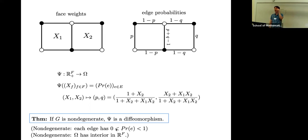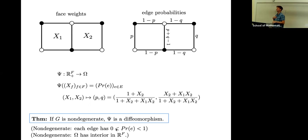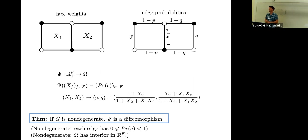It's a non-trivial diffeomorphism from some positive orthant onto the interior of the polytope. 'Non-degenerate' means that every edge participates in some dimer cover — every edge has probability strictly between zero and one, meaning there are some dimer covers which don't use that edge and some which do. The map is a diffeomorphism onto the interior, because the positive weights form an open set.